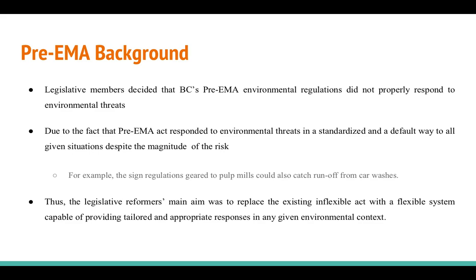So what happened before EMA? Legislative members decided that BC's pre-EMA environmental regulations did not properly respond to environmental threats, due to the fact that the pre-EMA act responded to environmental threats in a standardized and default way to all given situations despite the magnitude of the act. For example, a regulation geared to a pulp mill could also catch runoff from car washes. Thus, the legislative reformers' main aim was to replace the existing inflexible act with a flexible system capable of providing tailored and appropriate responses to any given environmental context.